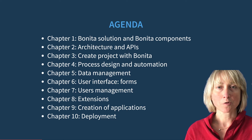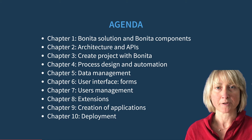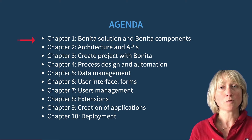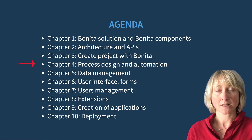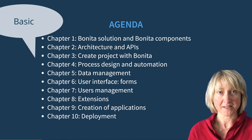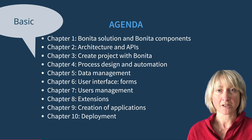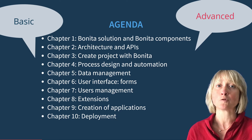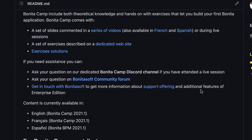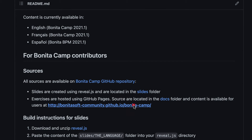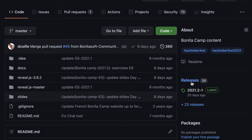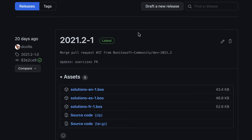To make sure this Bonita camp is adapted to project team members as well as developers, we have split the training into 10 chapters that you can see here. Each video will first describe the concept in a basic way, then the second part of each chapter will go further into the technical details. You can practice while following the videos thanks to the exercises available on GitHub, and you can find the solutions to each exercise on GitHub as well in the Release section.